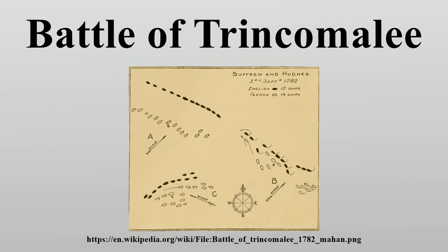Suffren sailed from Trincomale on 30 September, arriving at Cuddalore on 4 October. Eleven days later he sailed for winter quarters in Acheh, where he arrived on 7 November. Hughes, who did not want to remain in the exposed anchorage of Madras during the monsoon season, sailed for Bombay. His whole fleet suffered through the early days of the monsoon, and some ships took two months to arrive there.